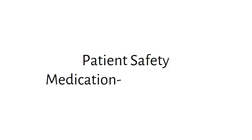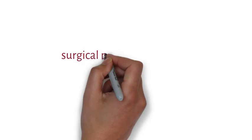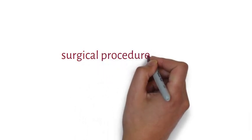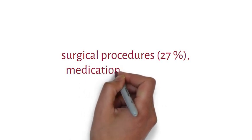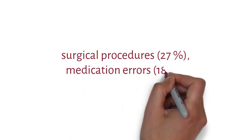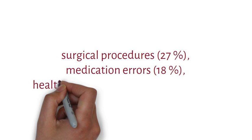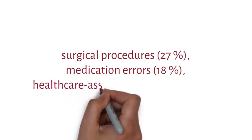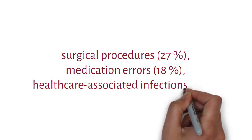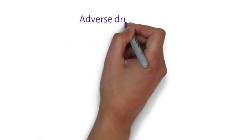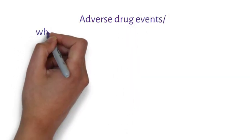I'm going to talk about medication related errors. There are three most common types of errors compromising patient safety. These include surgical procedures, medication errors, and healthcare associated infections. In this video we will describe errors, reactions, or events related to medication use.